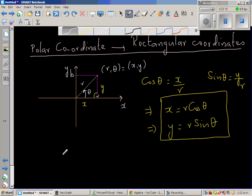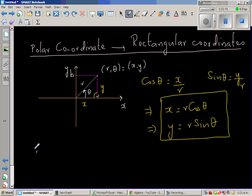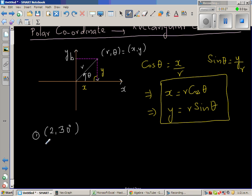Let us start with, say, (2, 30°). The first example is (2, 30°). So, this formula, we can say r is 2, and θ is 30°.